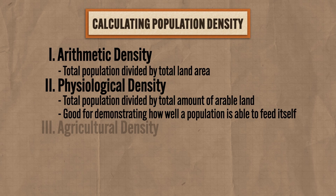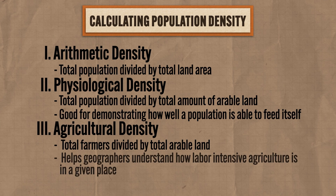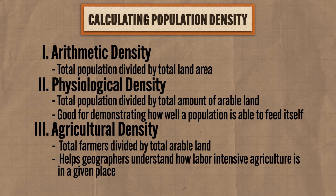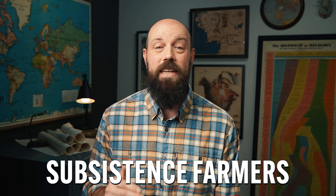Finally, the third calculation is agricultural density, which is the total number of farmers divided by total arable land. This measure helps geographers understand how labor-intensive agriculture is in a given place. A lower number means fewer farmers growing food, which typically means more mechanization on farms. A high number usually means many farmers are subsistence farmers, growing only what they need to survive and not selling goods on the market. Each of these calculations helps geographers get the whole picture of human impact on the environments in which people live. Click here to keep reviewing Unit 2 videos, and grab my AP Human Geography Heimler Review Guide to get an A in your class and a 5 on your exam.